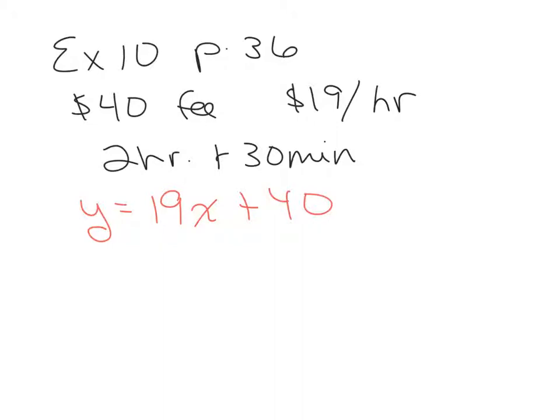Now, to find out how much we're going to be charged for two hours and 30 minutes, we need to put that in here for X, but we're not going to put 230, two hours and 30 minutes in hours would be two and a half. So we're going to substitute two and a half, and of course you can use decimals when we're talking about time. 2.5.